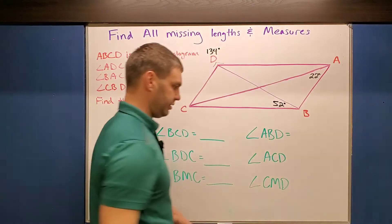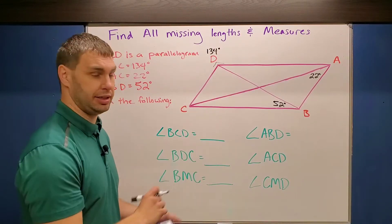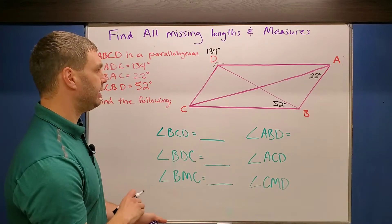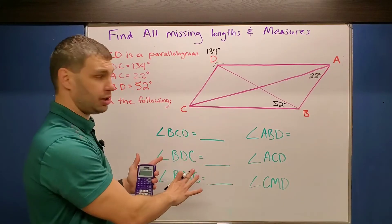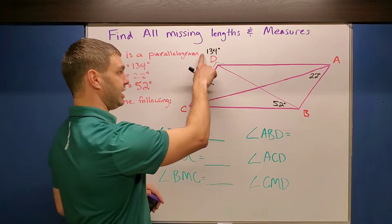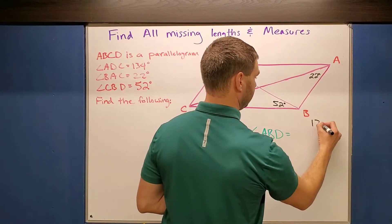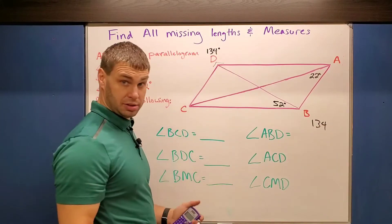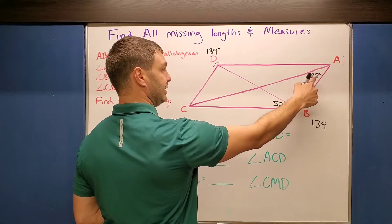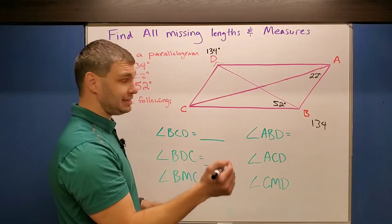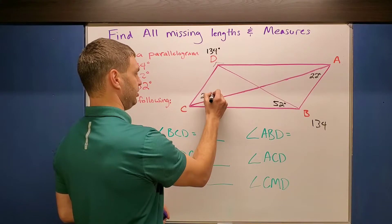What else does it tell me? It says BAC is 22 degrees — that's just going to be this lower angle. And then lastly, CBD is this angle, and that's 52 degrees. Now we can use the properties of a parallelogram to help us out here. I know that opposite angles are the same, so if this is 134, so is this: 134. Similarly, if this is 22 degrees, then that is an alternate interior angle with this one — 22 degrees.